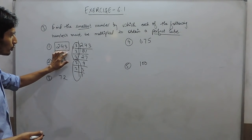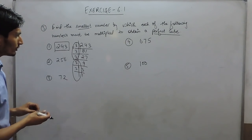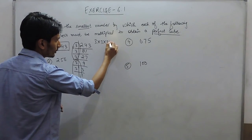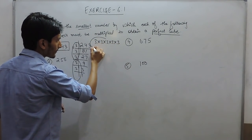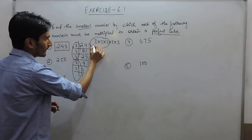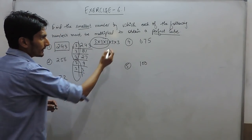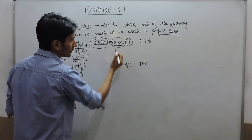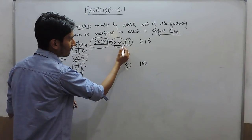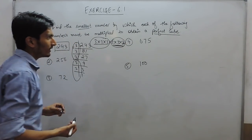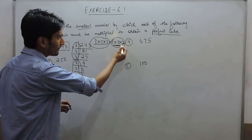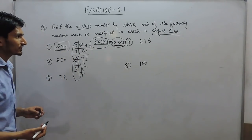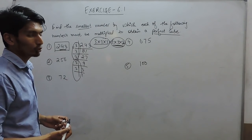So if we want to make this a perfect cube, we must have a complete group of 3. There is one group of 3, but one number is missing to complete the next group of 3. So we must add another 3 to complete this group. Therefore, we have to multiply this number by 3 to make it a perfect cube number.